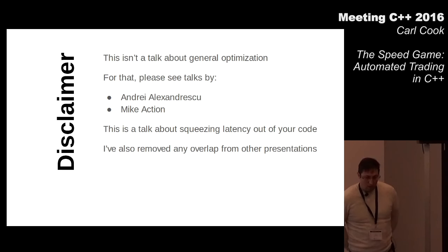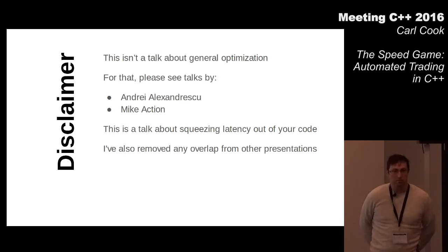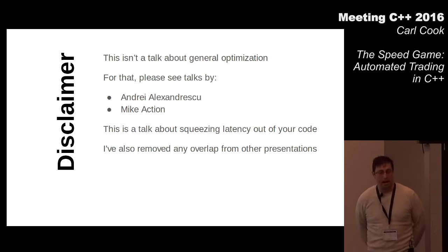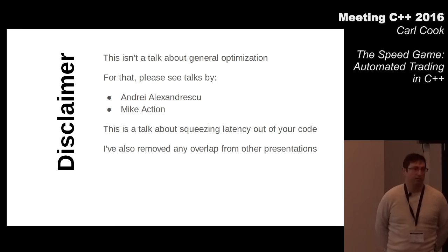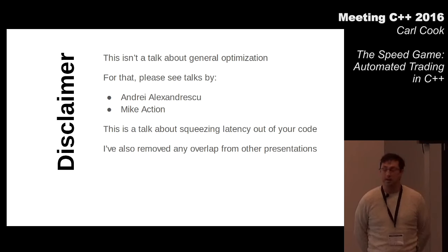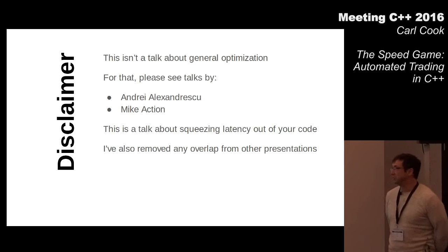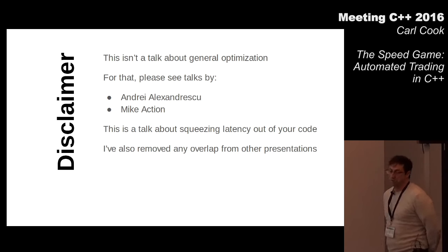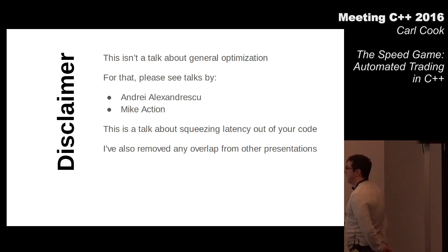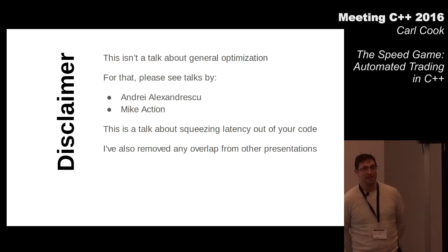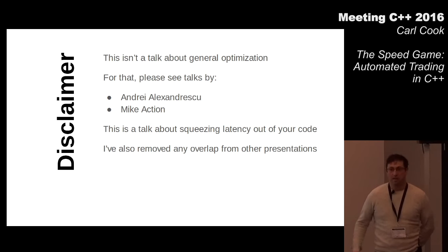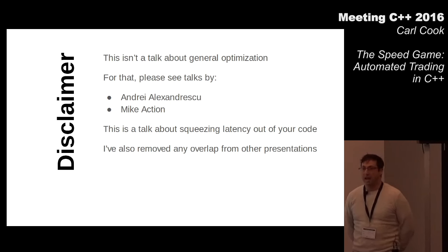This isn't a talk on general performance. Low latency performance is quite different from general performance, which is often more about high throughput — like rendering at 60 frames a second on relatively low spec hardware. This is more about squeezing the last few nanoseconds out of your system. I've also removed some slides that overlapped with presentations from yesterday to give us more time at the end.